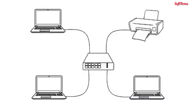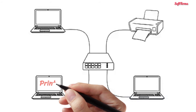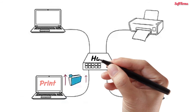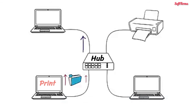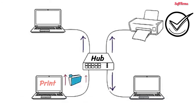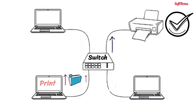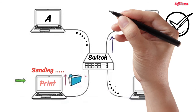Suppose your computer is connected to a printer in a star topology network. Now you click print from your computer to print a file. The file is sent to the central device. If the central device is a hub, the file is forwarded to all connected computers; however, only the printer accepts it. On the other hand, if the central device is a switch, the file is sent to the printer only — that is unicast transmission. Moreover, when your computer is busy sending a file to the printer, computers A and B can also communicate with each other without affecting the computer-printer link.